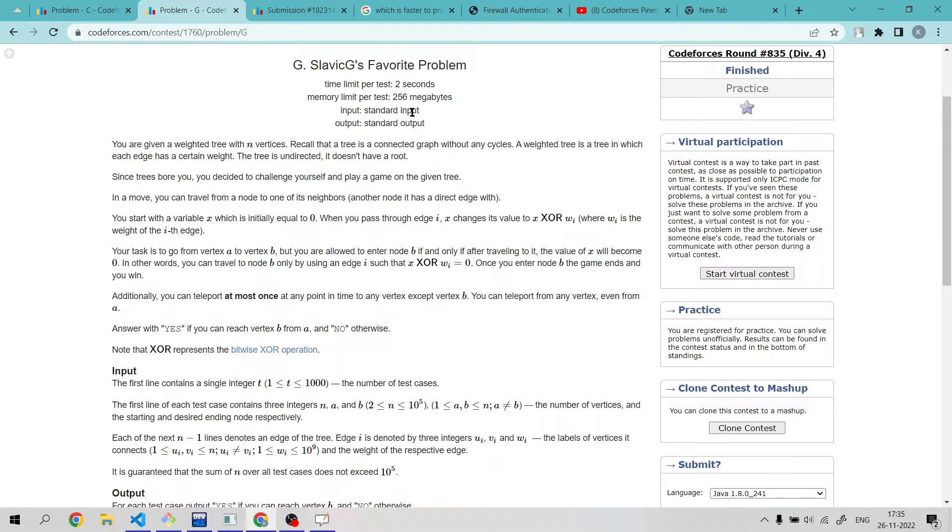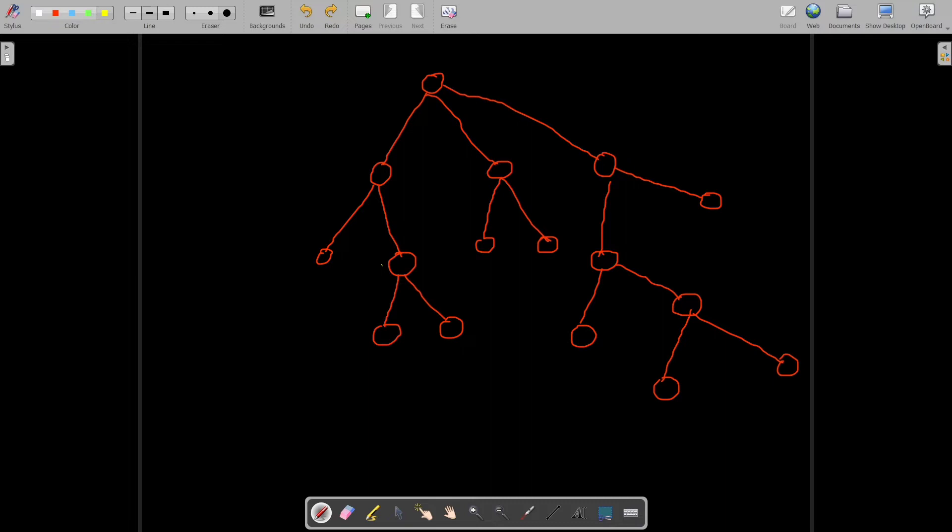First of all, let's see what we have given in the question. We have given a weighted tree and we have given two vertices A and B.